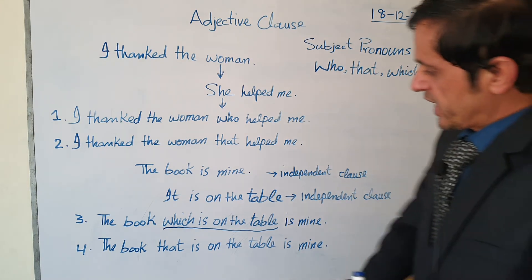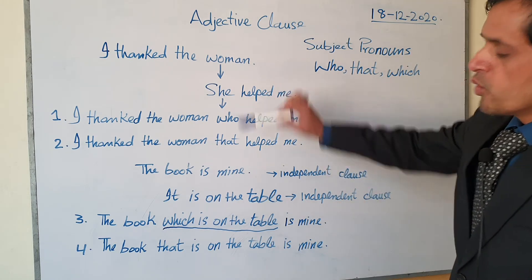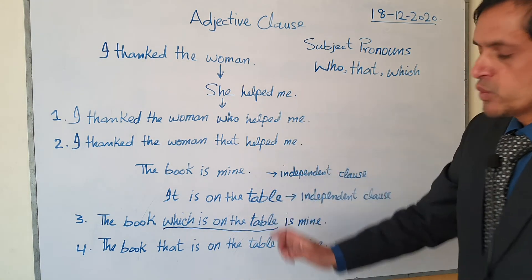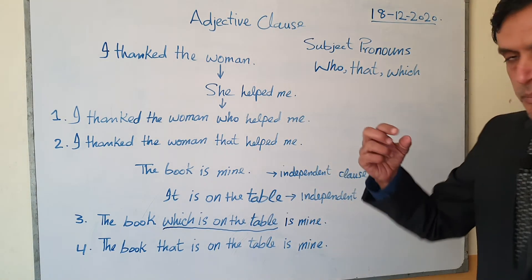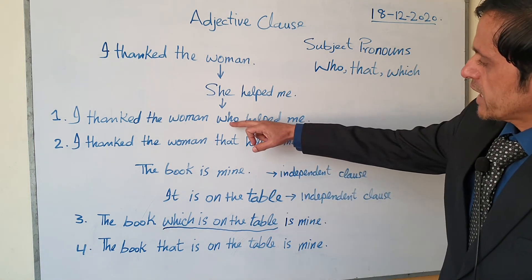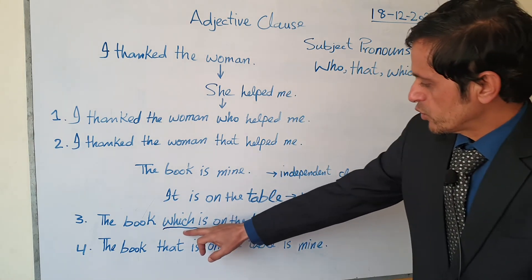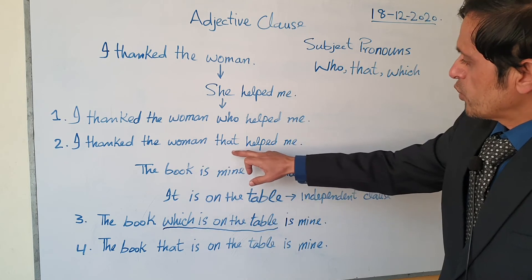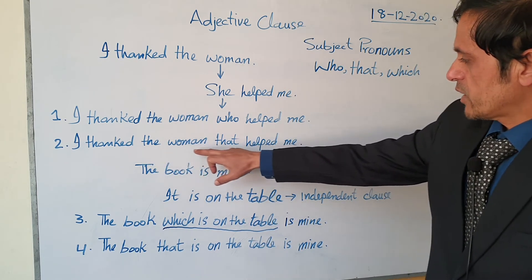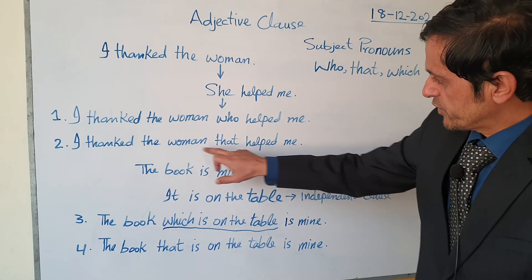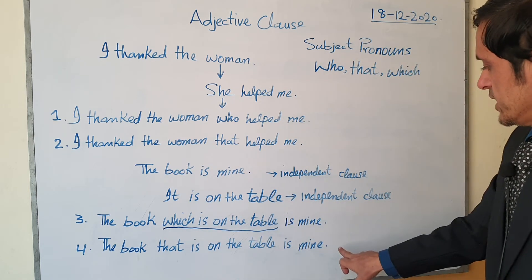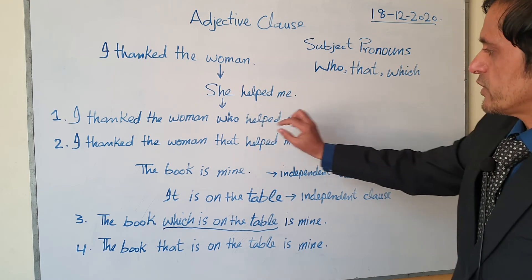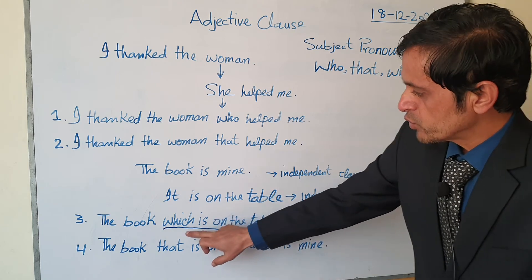An important point: we can use 'who' only for persons or people, while 'which' is used only for things. 'That' can be used for both — for people and for things. So here we used 'who' only for the person: 'I thanked the woman who helped me.' And 'which' only for the thing: 'The book which is on the table.' But 'that' works for both.